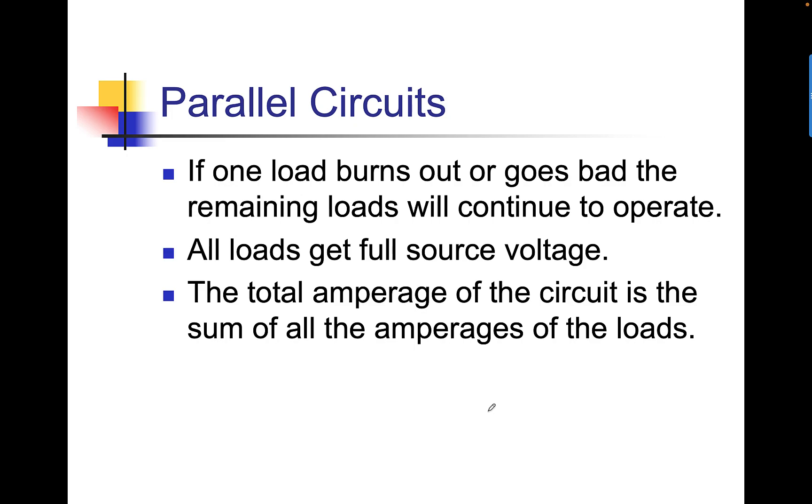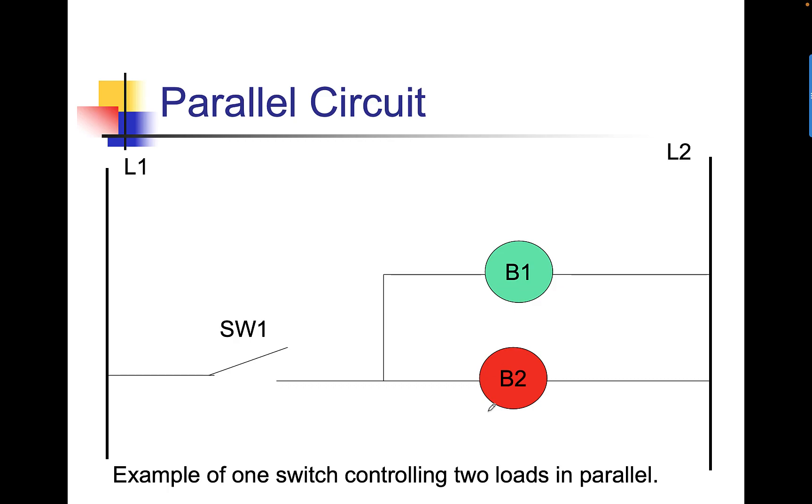All loads get full source voltage. The total amperage of the circuit is the sum of all the amperages of the loads. In other words, amperages add. So in this case, I have switch one that's actually controlling two loads in parallel. The reason they're in parallel is if switch one is closed, bulb one is getting full source voltage and bulb two is also getting full source voltage. The current does not need to go through the other load. They're next to each other. That's in parallel.